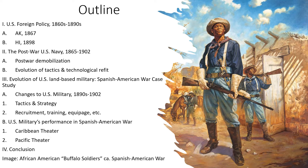I've discussed some of these developments in American history in previous videos, but in this video we're really going to focus on military history, changes to US tactics, strategy, technology, and the experiences of American military personnel during this period as well. The image on this slide is of African-American Buffalo soldiers. It was very common for African-American soldiers to not receive the newest equipment and uniforms. These soldiers are using older percussion cap operated carbines as opposed to the newer bolt-action rifles. They're wearing the older blue uniforms. During the Spanish-American War the uniforms are going to be changed from blue to khaki, but it's going to happen very gradually in phases.